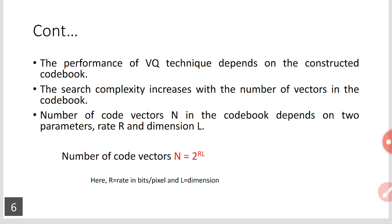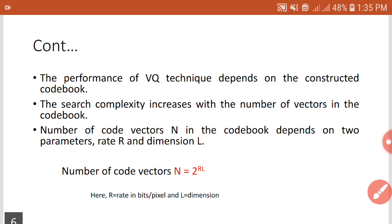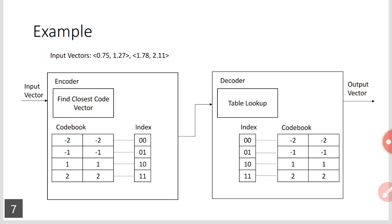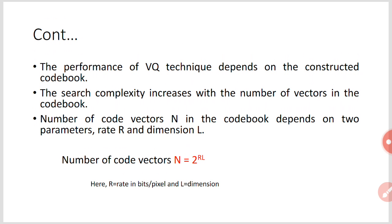The number of code vectors N in the codebook depends on two parameters: rate r and dimension l. The dimension of a vector is the number of individual values in a single vector — if there are three values, it is a three-dimensional vector; four values makes it a four-dimensional vector. The number of code vectors N is given by the equation N = 2^(r × l), where r is the rate in bits per pixel and l is the dimension. From this equation, as the number of code vectors increases, the rate increases and the size of the codebook also increases.